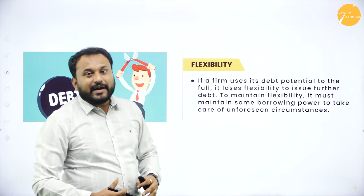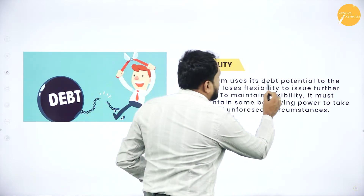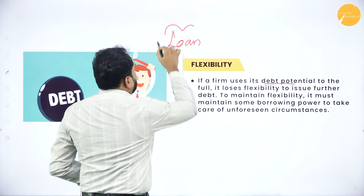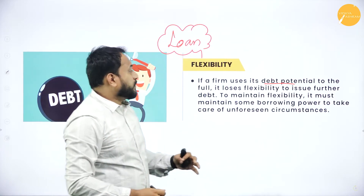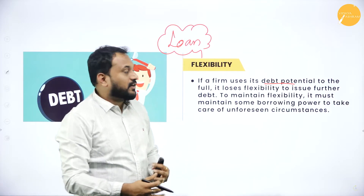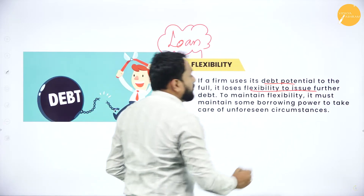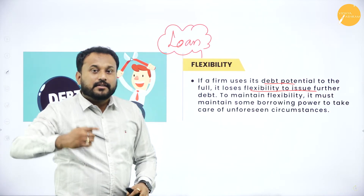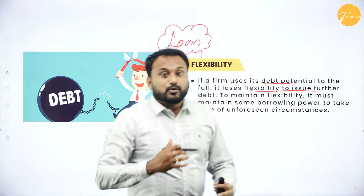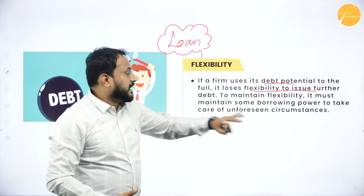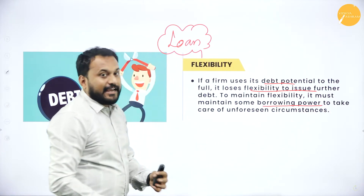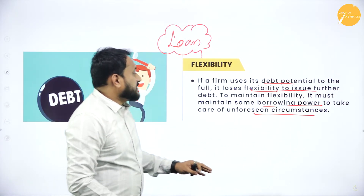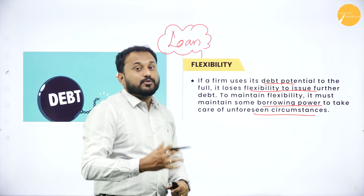Next is flexibility. If a firm uses its debt potential to the full, they don't take the loan just for namesake — they use it for optimum utilization, and it loses flexibility to issue further debts. The more and more you are actually taking loan, it will lose its flexibility. To maintain flexibility, the firm must maintain some borrowing power to take care of unforeseen circumstances. Only then can flexibility be maintained, or else you will lose it.